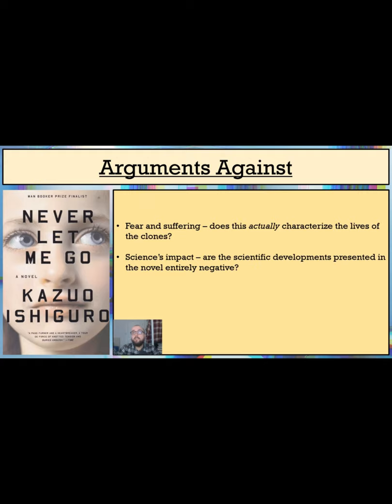The development of clones, reveals Miss Emily towards the end of the novel, meant that people did not die from cancer, motor neurone disease, or heart disease, and probably plenty of other illnesses and conditions that are currently uncurable today. Can we really say that a future in which people do not die from such ailments demonstrates science's negative impact on humanity, or is it in fact much more complex than that?